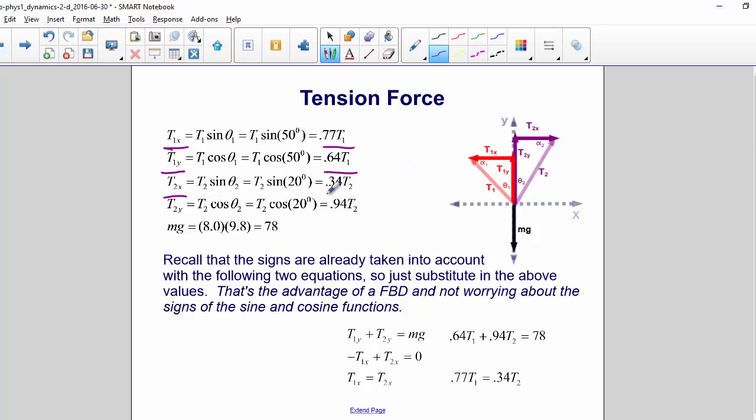T2x is equal to 0.34 of T2, and T2y is equal to 0.94 times T1.